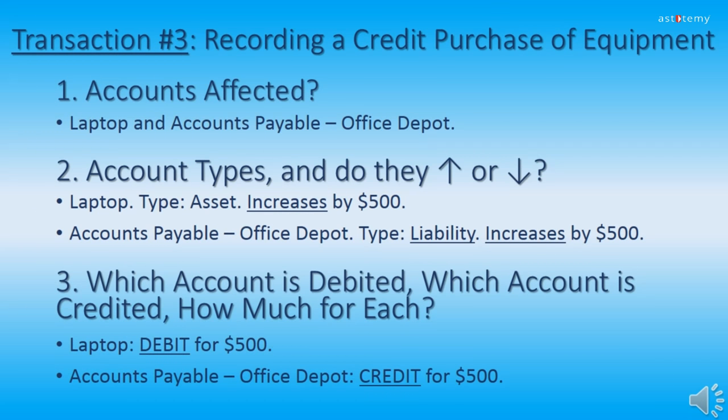We're going to cover the first three steps of recording the credit purchase of equipment for transaction three. Step one — identify the accounts affected: Laptop and Accounts Payable, Office Depot. Step two — account types and increase or decrease? When you acquire an asset, it increases, so the laptop account increases by $500. When you acquire a liability, it also increases, so Accounts Payable, Office Depot, also increases by $500. Step three — our laptop will increase so it will be debited for $500; our Accounts Payable, Office Depot, will also increase so it will be credited for $500.